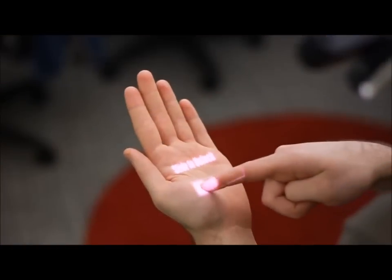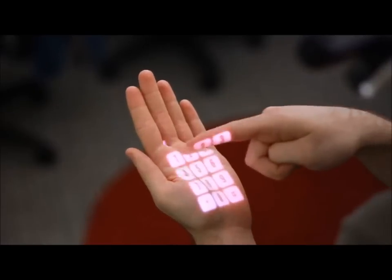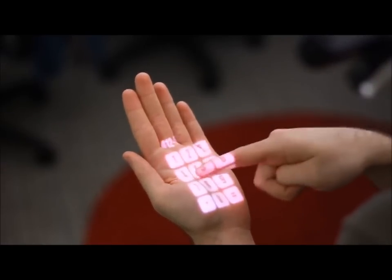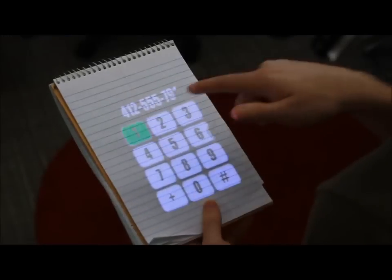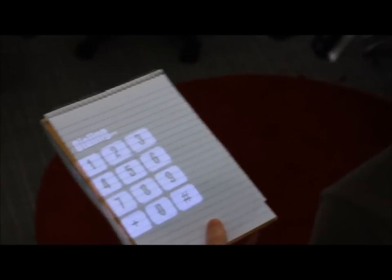OmniTouch is a wearable system that enables graphical, interactive, multi-touch finger input on everyday surfaces. Our system allows wearers to interact with applications on their hands, arms, legs, books, walls, tables, and many other surfaces.